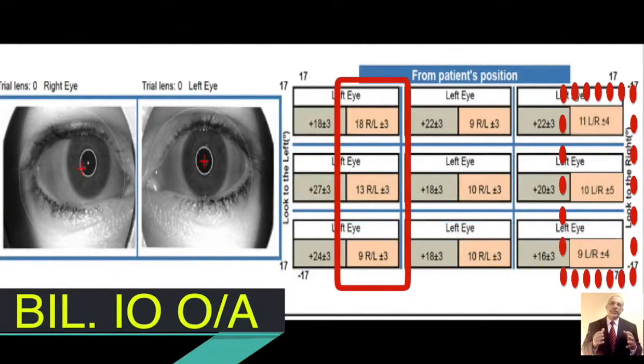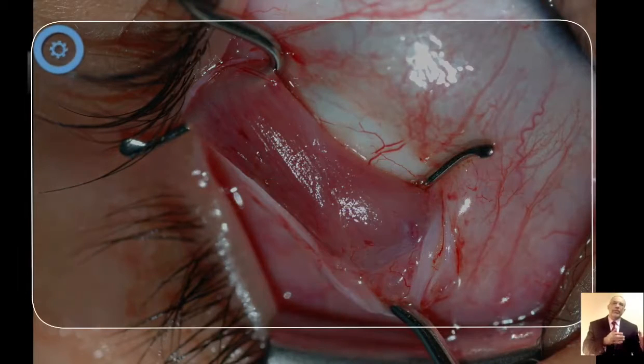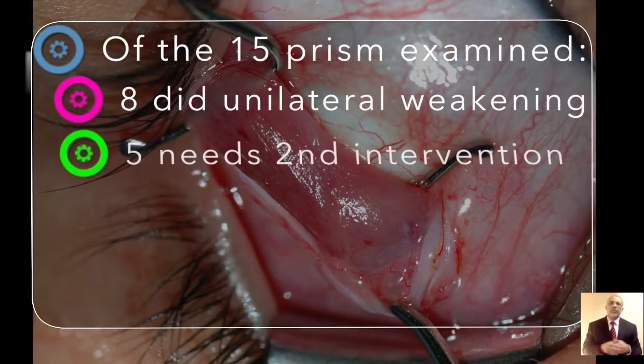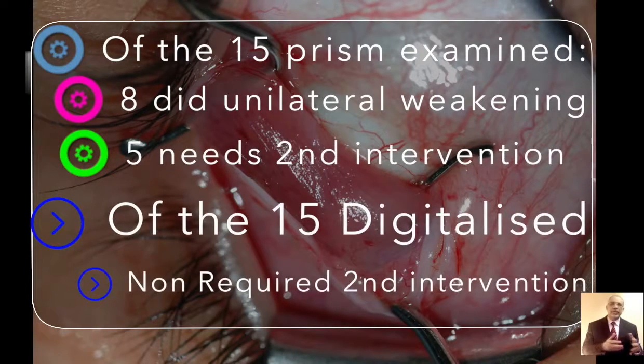Of the 15 patients who were examined by the prism, eight had to go back to the operating room to have a contralateral inferior oblique weakening procedure as I missed it during the first surgery. But for the other 15 patients who were examined with the Gaisler, none of them had to go back to the operating room and all were successful in the first intervention.